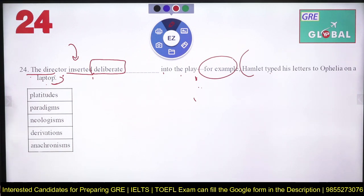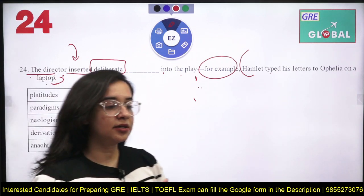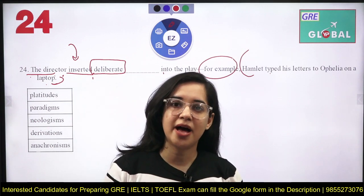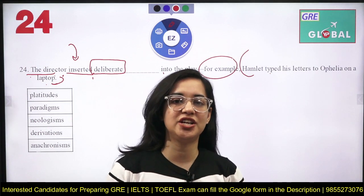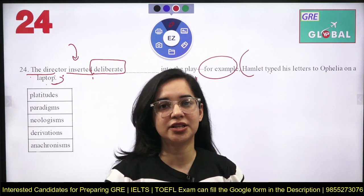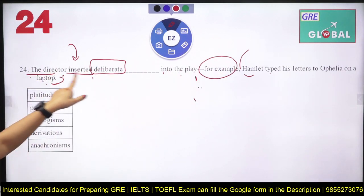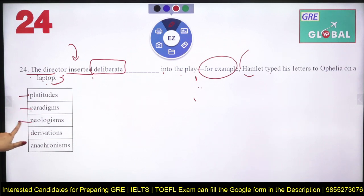Now the five options for the blank are: Platitude, Paradigm, Neologism, Derivation, and Anachronism. We need to identify which concept describes what the director deliberately inserted into the play.